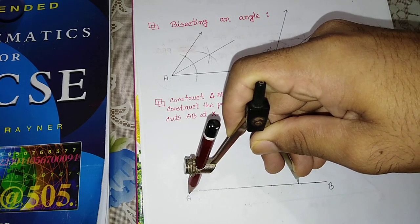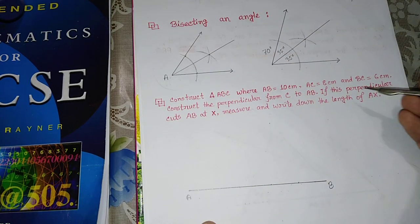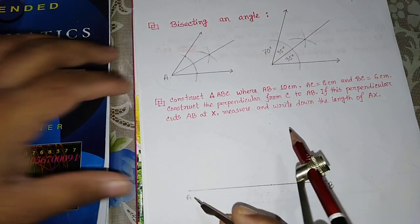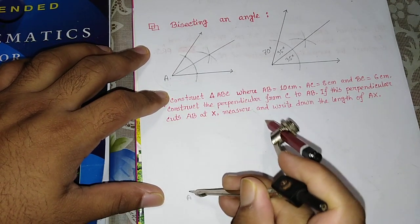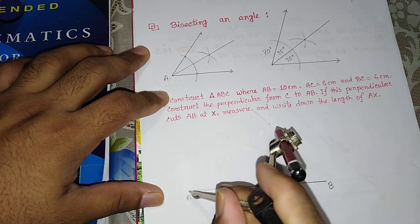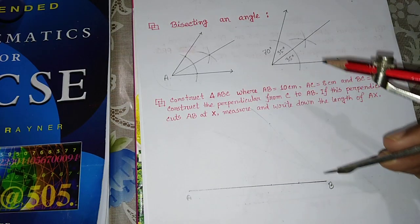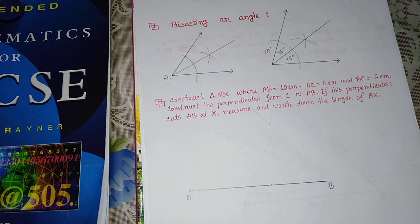I am measuring 8 cm for AC. That means from A, we take 8 cm and draw an arc. This gives us the 8 cm length.